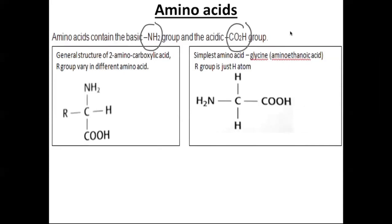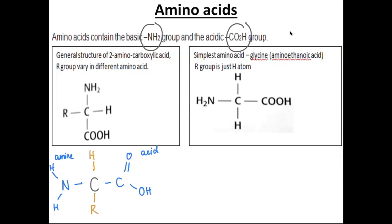The general structure of the amino acid is given, but I like to draw it like this. There will be a carbon center in the middle, then there is an NH2, which is the amine group. On the other side, there is the acid group, which is the carboxylic acid group. There are two more bonds on this central carbon. There's a hydrogen, and the fourth bond is called the side chain or the side group, represented by R.